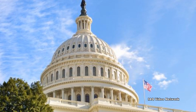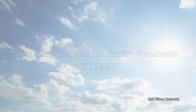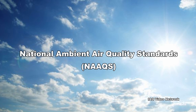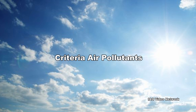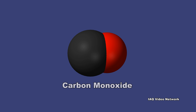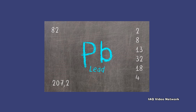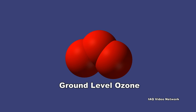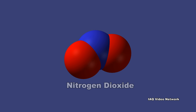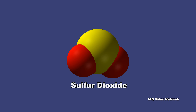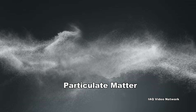In the United States, the Clean Air Act requires the Environmental Protection Agency to set national ambient air quality standards for 6 common air pollutants, also known as criteria air pollutants. These include carbon monoxide, lead, ground level ozone, nitrogen dioxide, sulfur dioxide, and particulate matter.